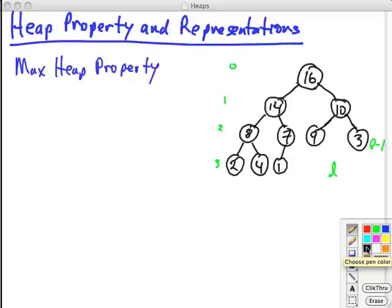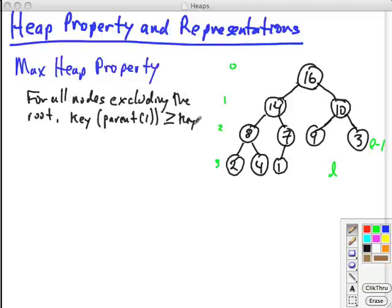So let's first look at the max heap property, which is that for all nodes, the key of the parent is greater than or equal to the key of i. So you can see this in this diagram here. This is a max heap. Pick any node. Node 7, the parent key is bigger. Node 9, the parent key is bigger. Node 3, the parent key is bigger. And so on.